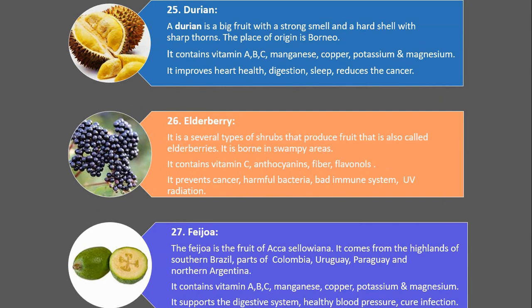Number 25. Durian. A durian is a big fruit with a strong smell and a hard shell with sharp thorns. The place of origin is Borneo. It contains vitamin A, B, C, manganese, copper, potassium and magnesium. It improves heart health, digestion, sleep, and reduces cancer risk.